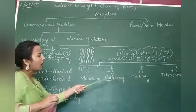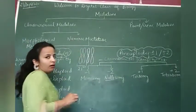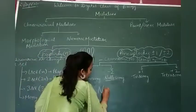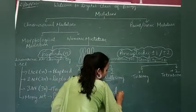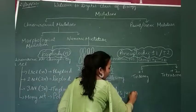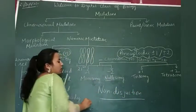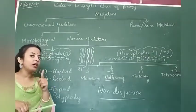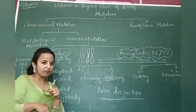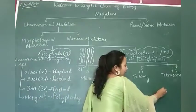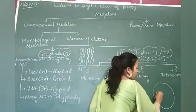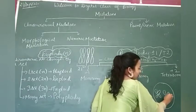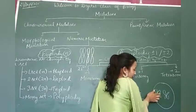So students, when this trisomy and tetrasomy occur, it occurs due to non-disjunction. Where have we heard this name before? This term we have heard in our previous standard, where we studied about cell division. We studied that chromosomes during anaphase, they will separate out. Yes or no, they will separate out.